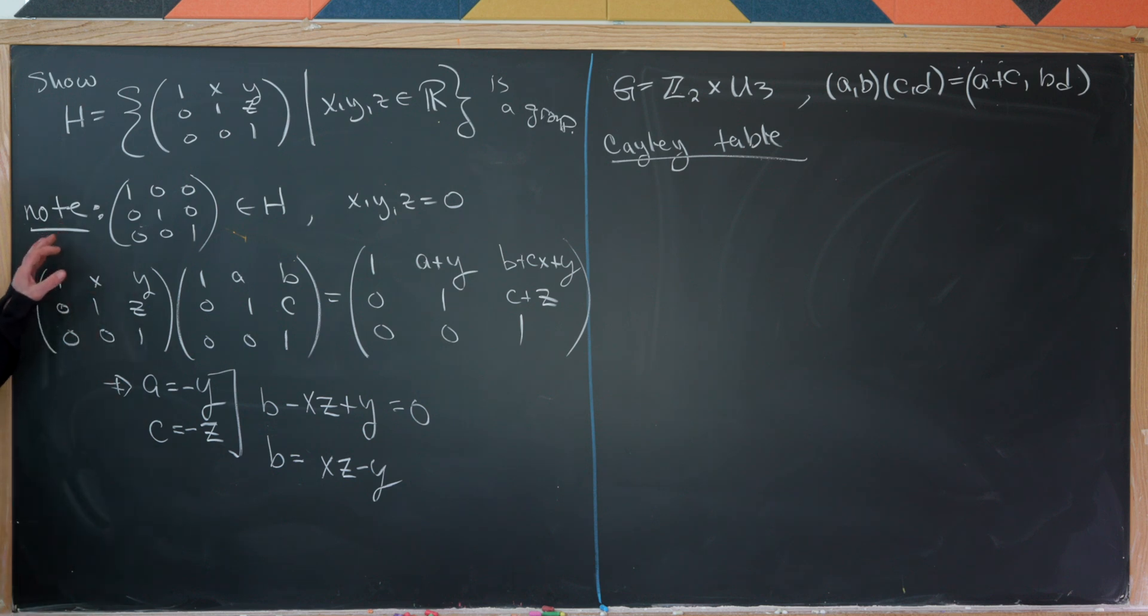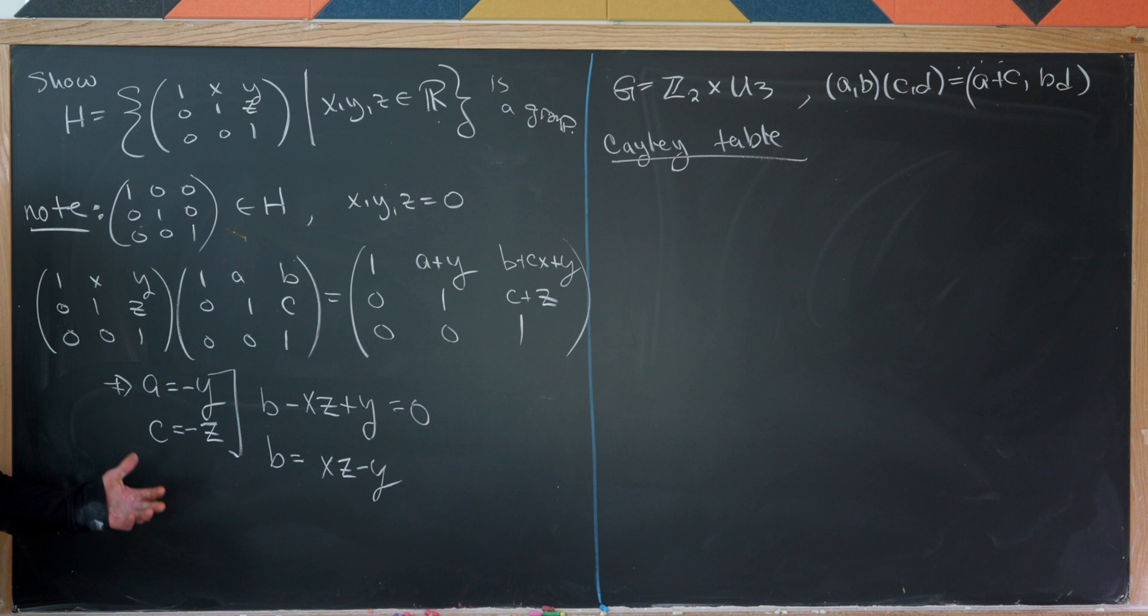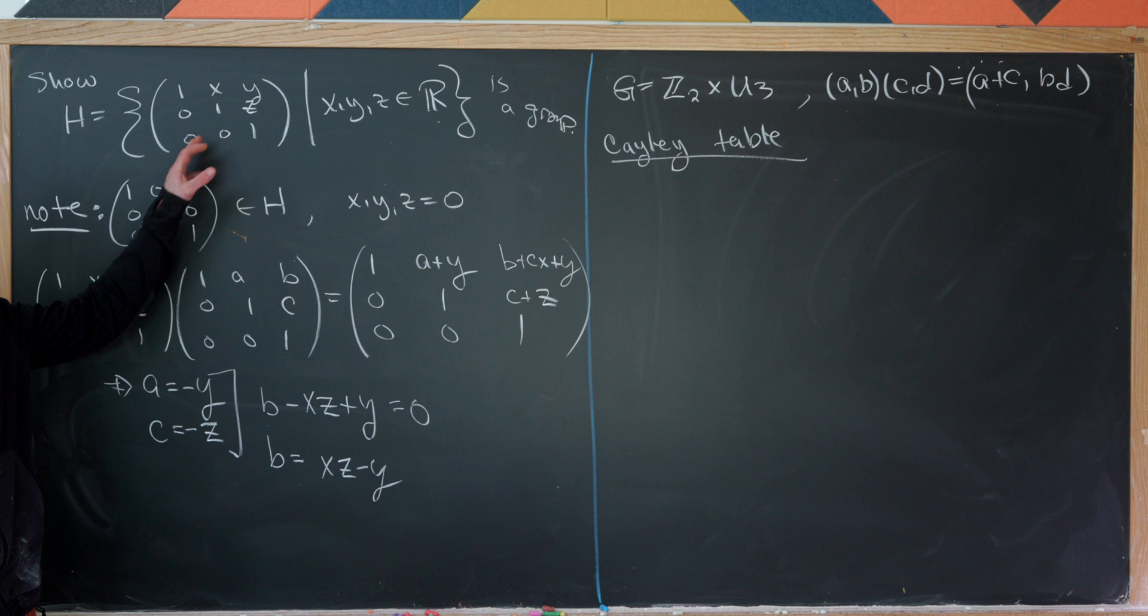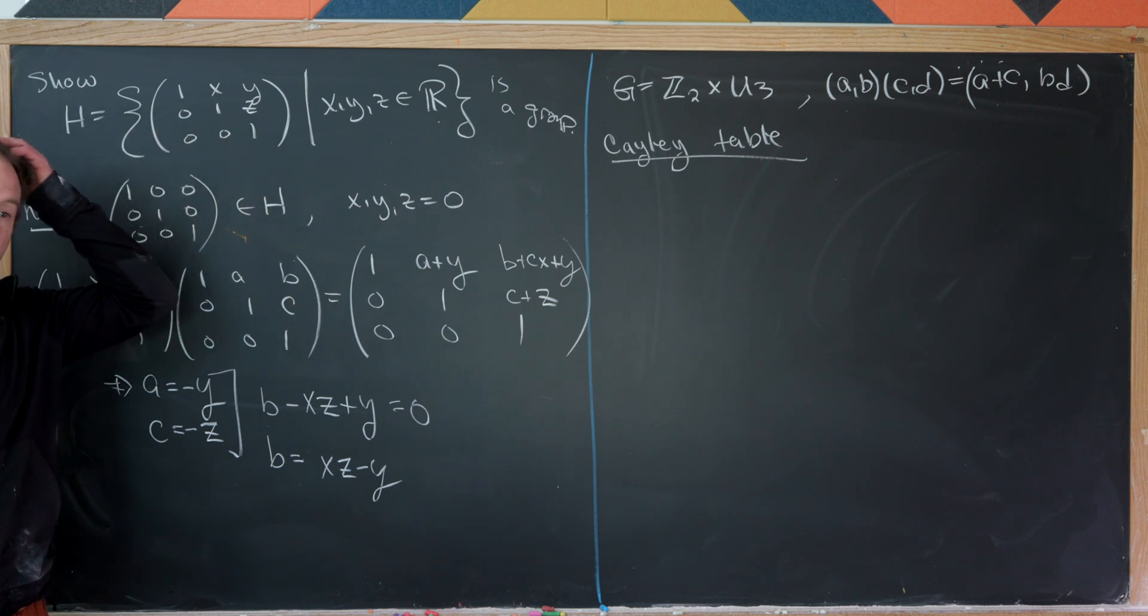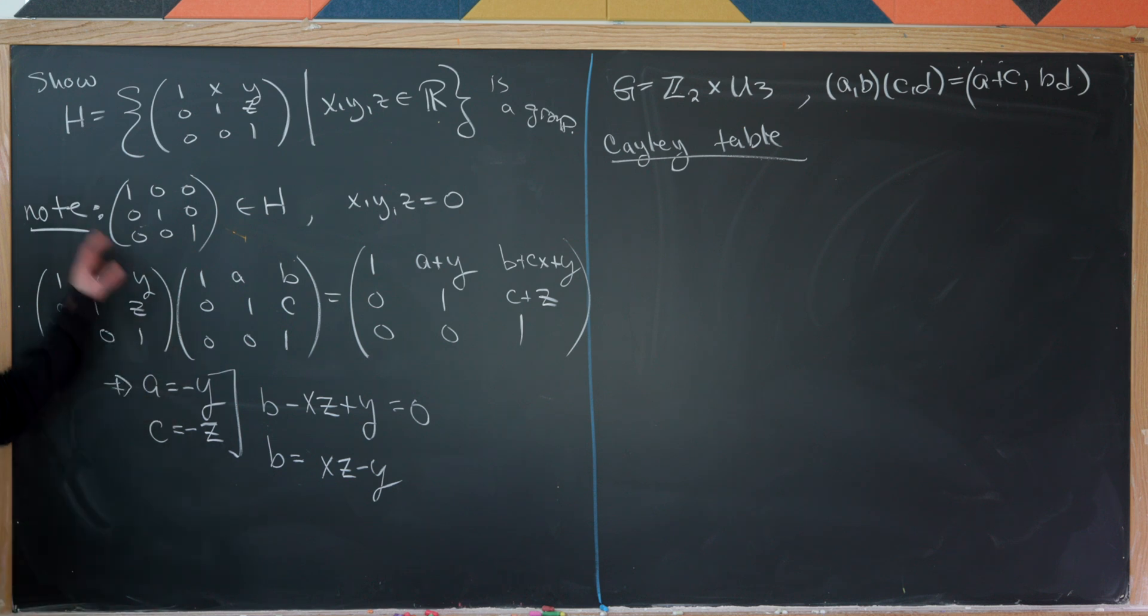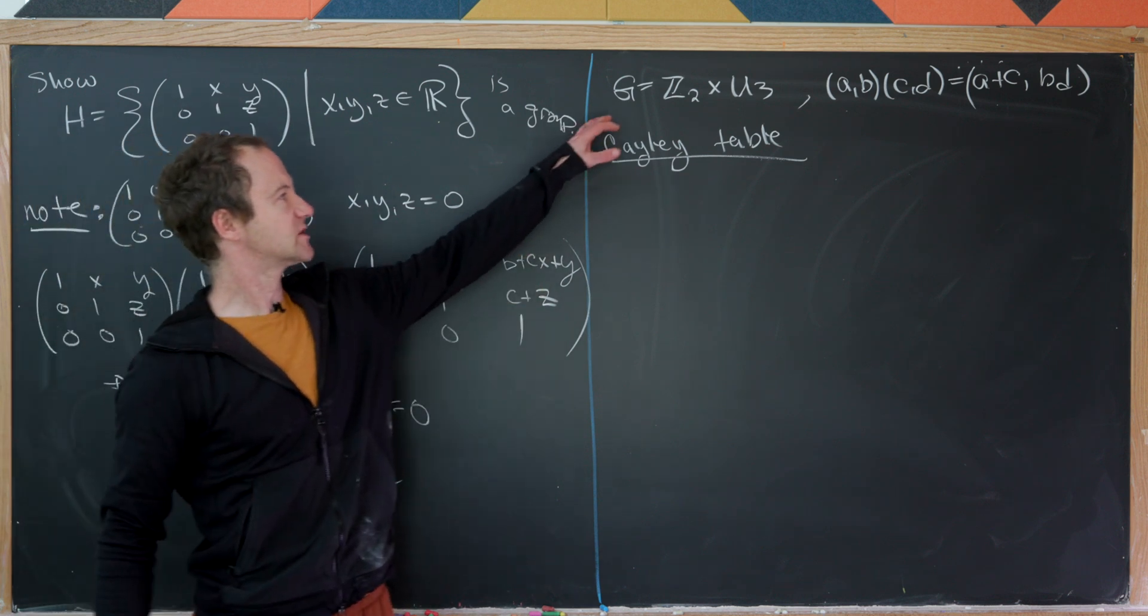So, in other words, the inverse of this right here would be this matrix right here where we've replaced A, B, and C with these combinations of X, Y, and Z. Okay, we've got an identity. We've got inverses. I guess the next thing to prove would be associativity. But actually, associativity is inherited from the fact that matrix multiplication is, in fact, associative. So we're good to go there. So all of those things together prove that this is indeed a group. Okay, so now let's look at this.